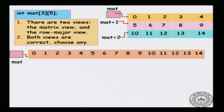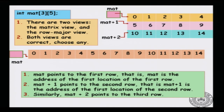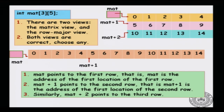In the row major viewpoint, mat points to the first row and mat+1 should point to the second row. We cannot say mat is pointing to the first element and mat+1 therefore points to element 1 — that is not what happens; it must be consistent with the matrix view. The pointer arithmetic mat+1 should point to the same element regardless of whether you use the matrix viewpoint or the row major viewpoint. So mat+1 still points to element 5 and mat+2 still points to element 10 — the two viewpoints are consistent.